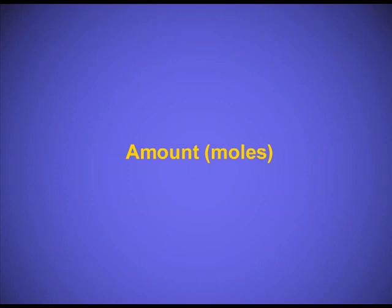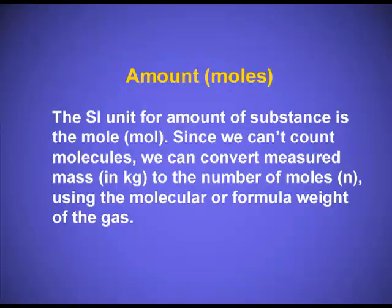To define amount or the mole, first of all we must know what one mole is. We have studied in unit 1 that one mole equals the collection of 6.023 × 10²³ particles. These particles can be atoms, molecules, or ions. This is also known as Avogadro's number. The SI unit for amount of substance is the mole.